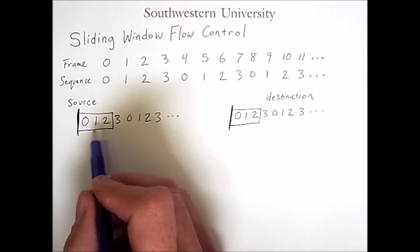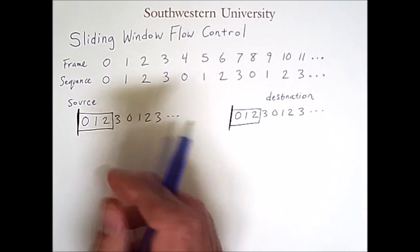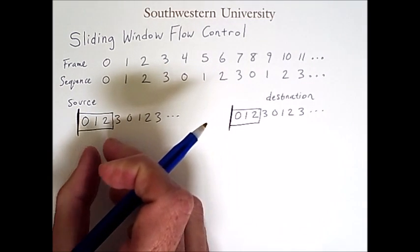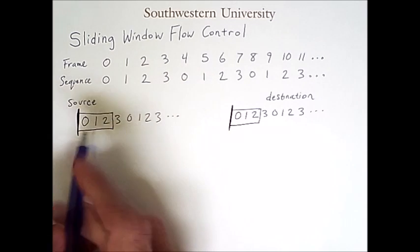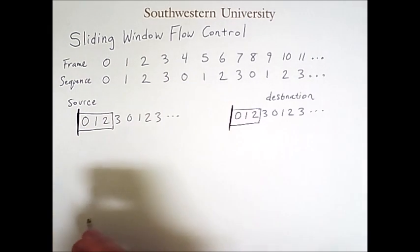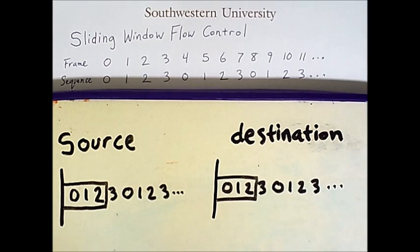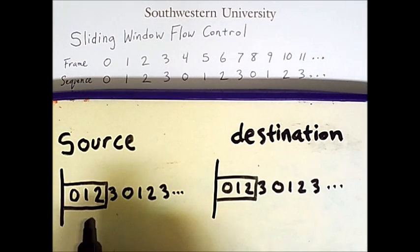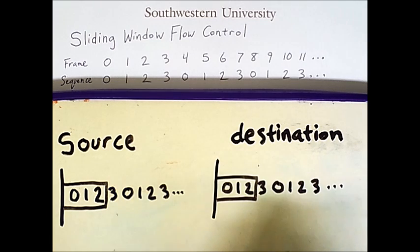In addition to that, we have these windows, and the window will gradually shorten as frames get sent. So let's just look at an example to see how this works. At the beginning of this process, the window encompasses the frames that the source can send before receiving an acknowledgement from the destination.